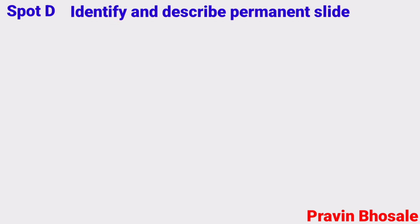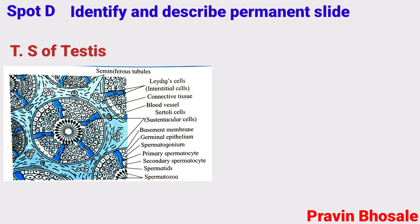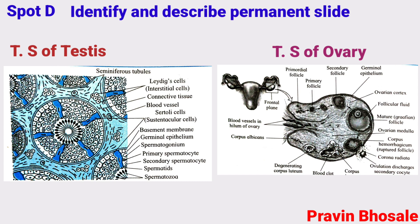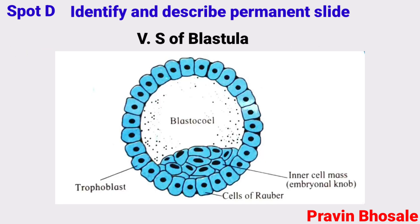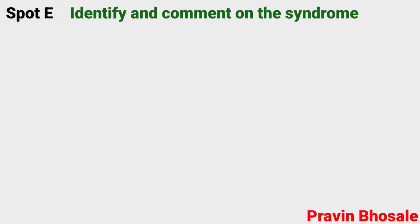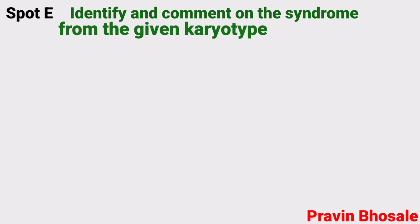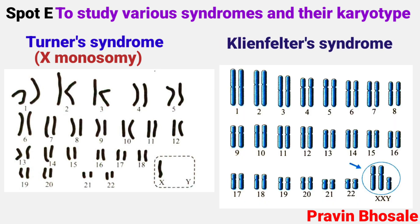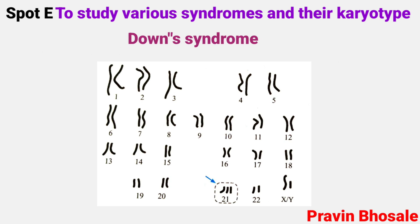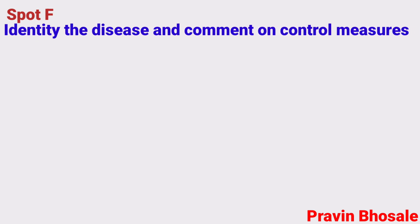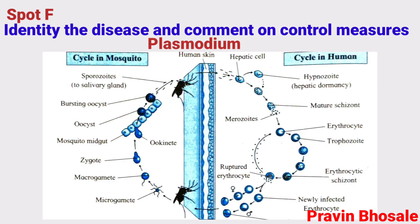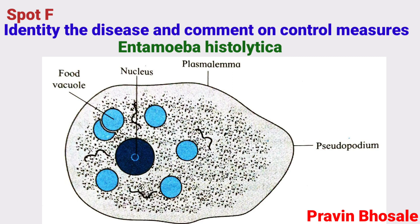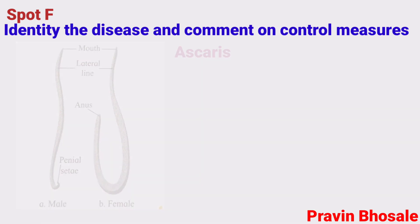Spot D: identify and describe a permanent slide of TS of testis, TS of ovary, or TS of blastula. Spot E: identify and comment on the syndrome from the given karyotype — Turner syndrome (X-monosomy), Klinefelter syndrome (XXY male), Down syndrome (21st trisomy). Spot F: identify the disease and comment on control measures — Plasmodium, Entamoeba histolytica, Ascaris, ringworm.